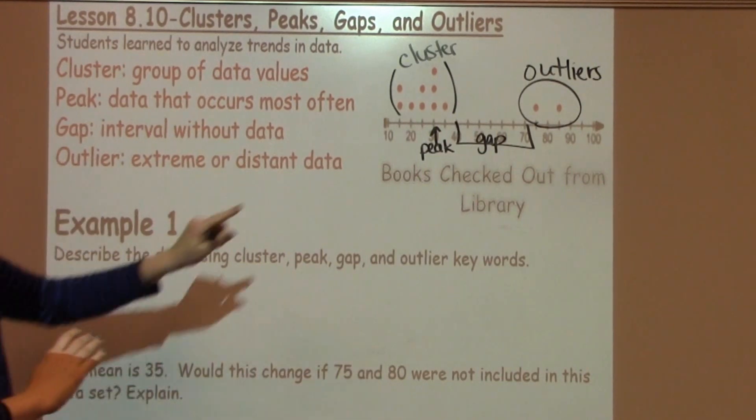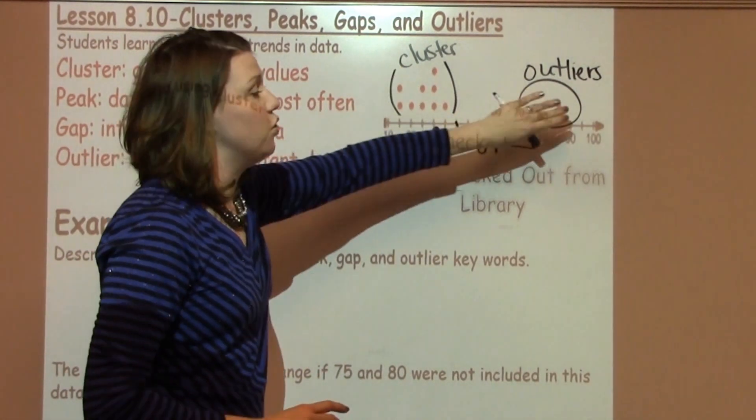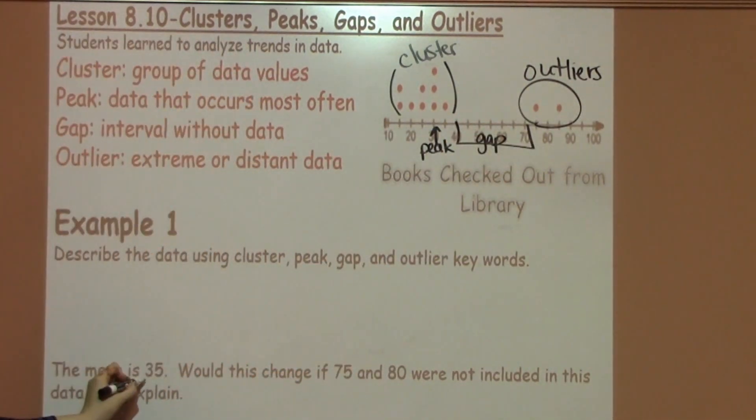So when the mean was found, they took all of these data points and divided by 12 points. They found that the mean was 35.